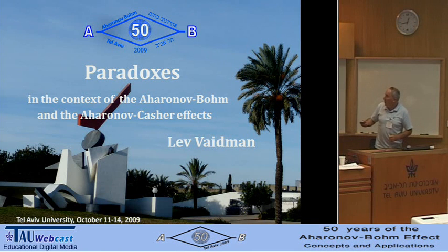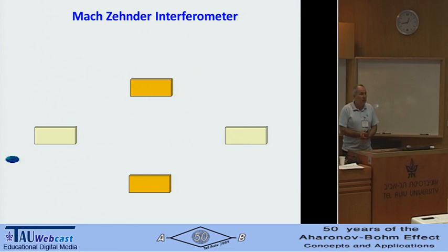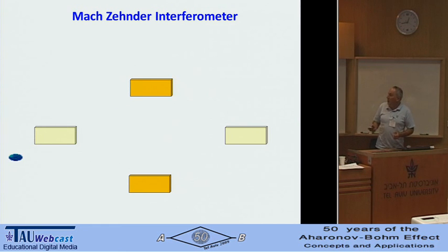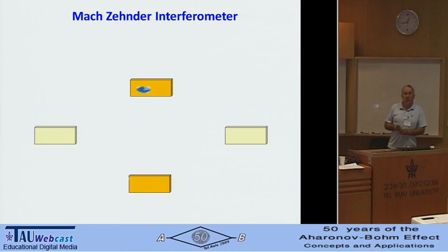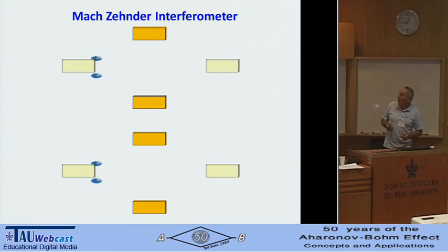I want to present these paradoxes in the simplest example I know — the simplest quantum experiment, a Mach-Zehnder interferometer. It is quantum if we use one particle. We can tune it such that every time we send a particle from one side, it goes to one particular port. If we tune it this way, then sending it from another side, it goes to another particular port.